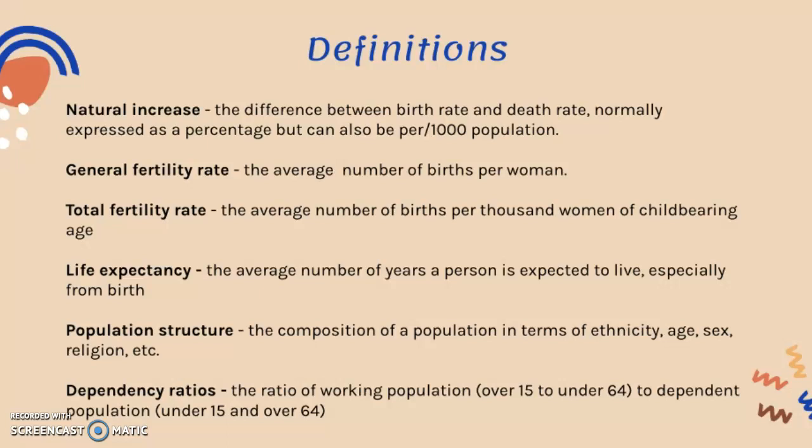Life expectancy is the average number of years a person is expected to live, especially from birth. Population structure is the composition of a population in terms of ethnicity, age, sex, religion, and so on. Finally, the dependency ratio is the ratio of the working population — those aged 15 to 64 — to dependent populations, which are the young (under 15) and the elderly (over 64). These are key terms you must know relating to demographics and population.